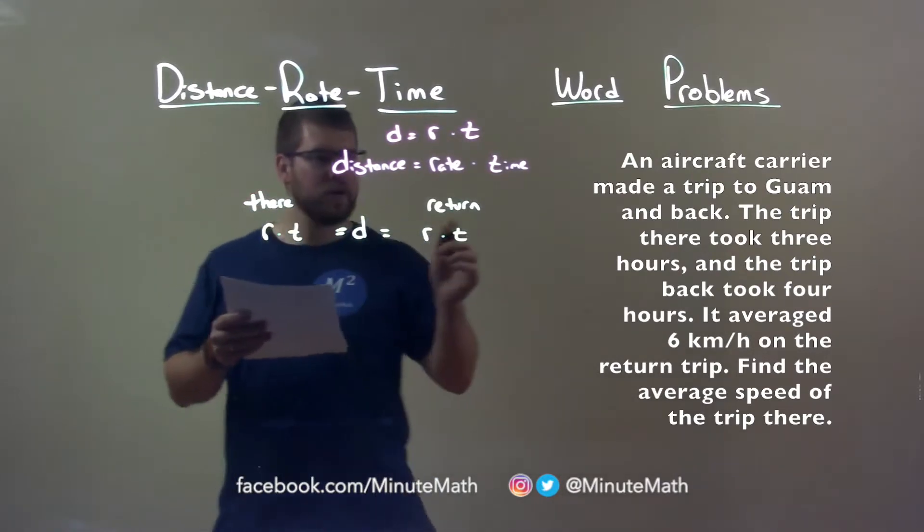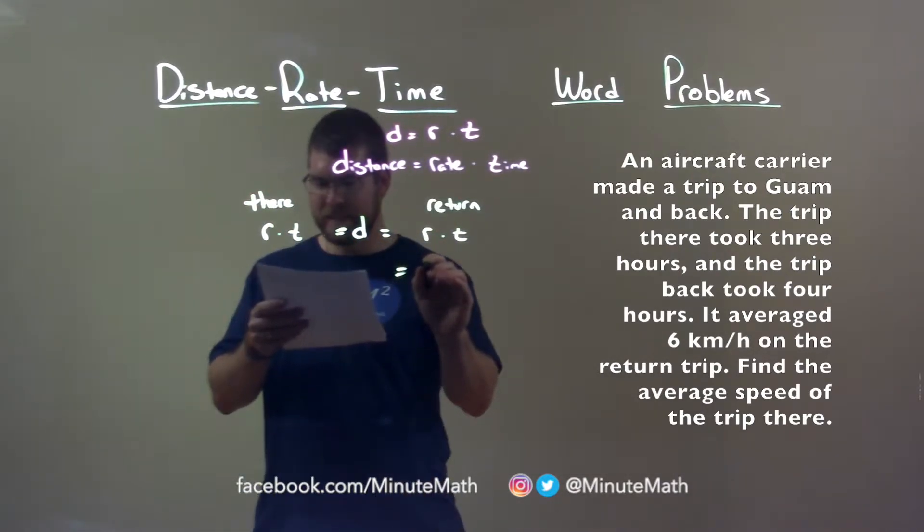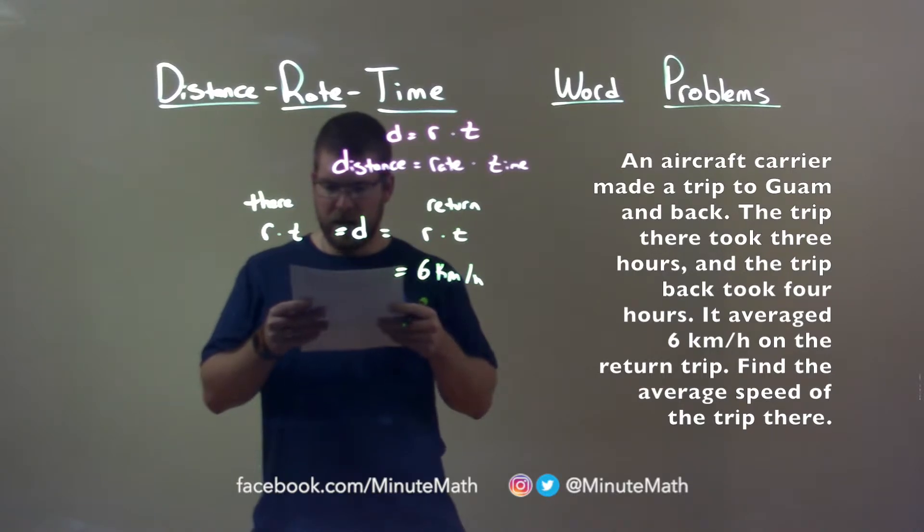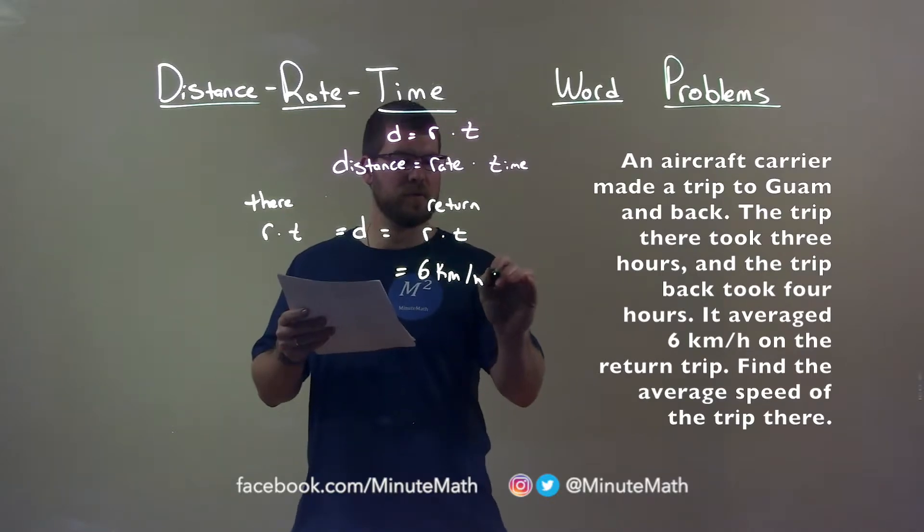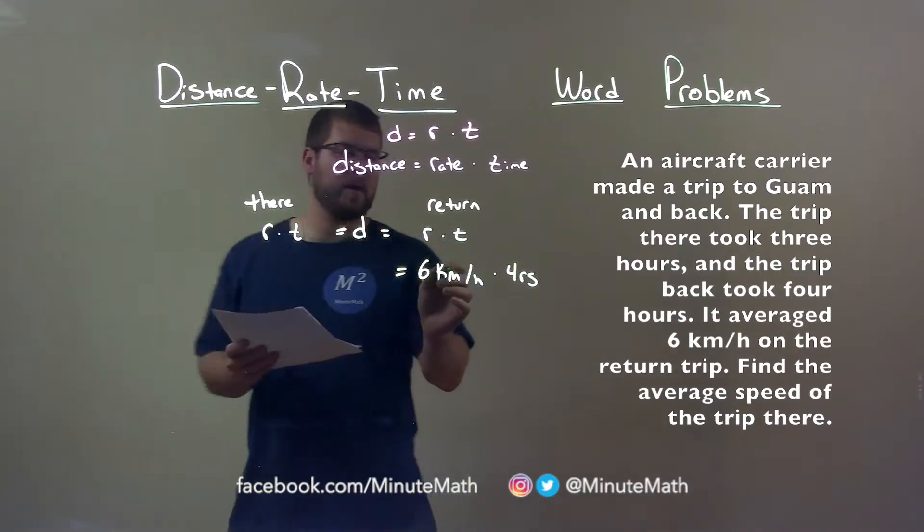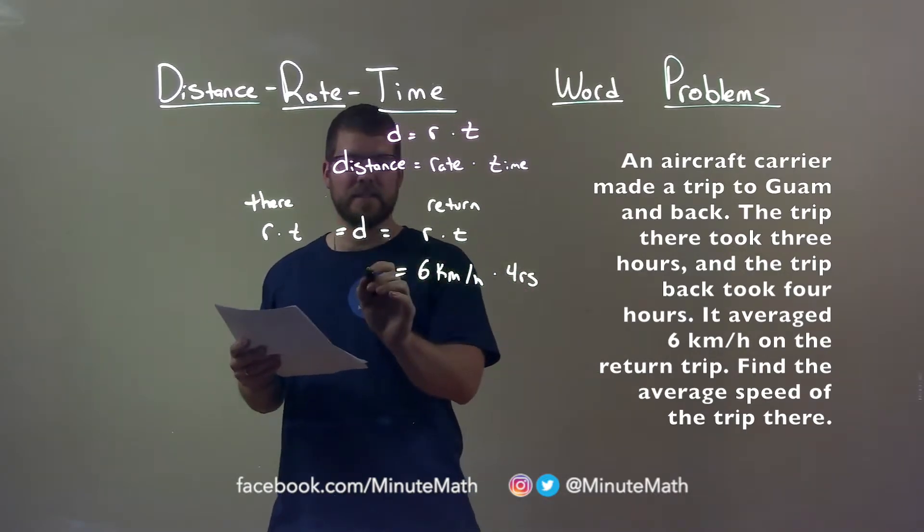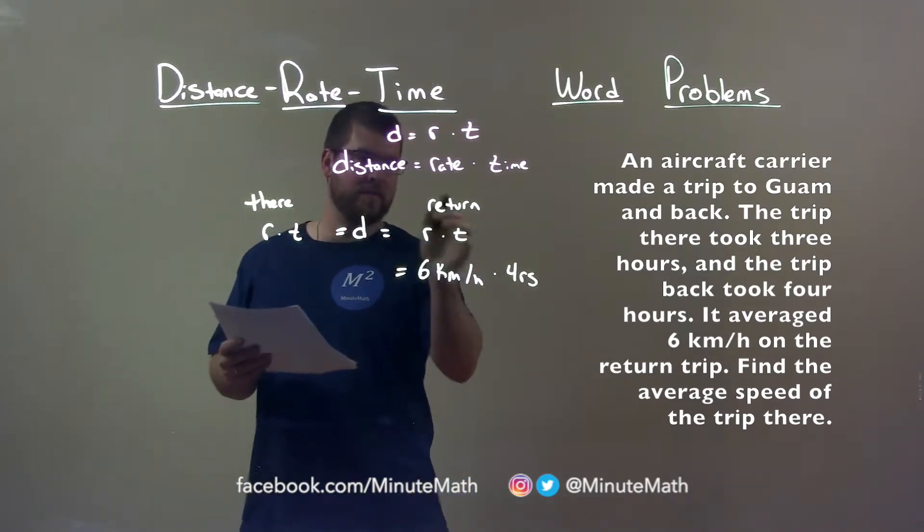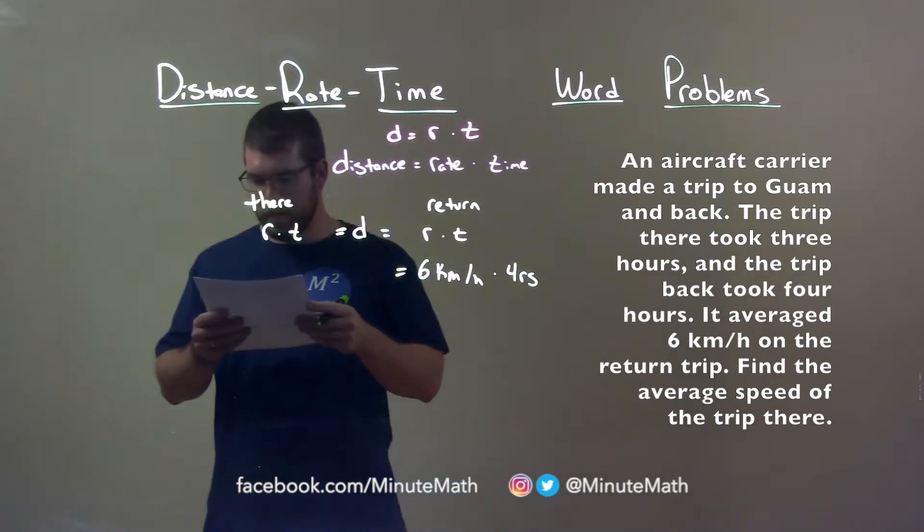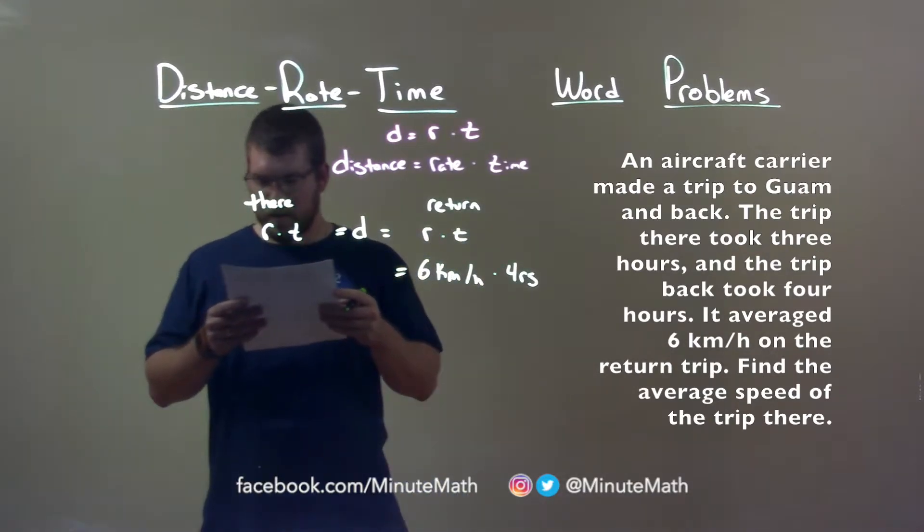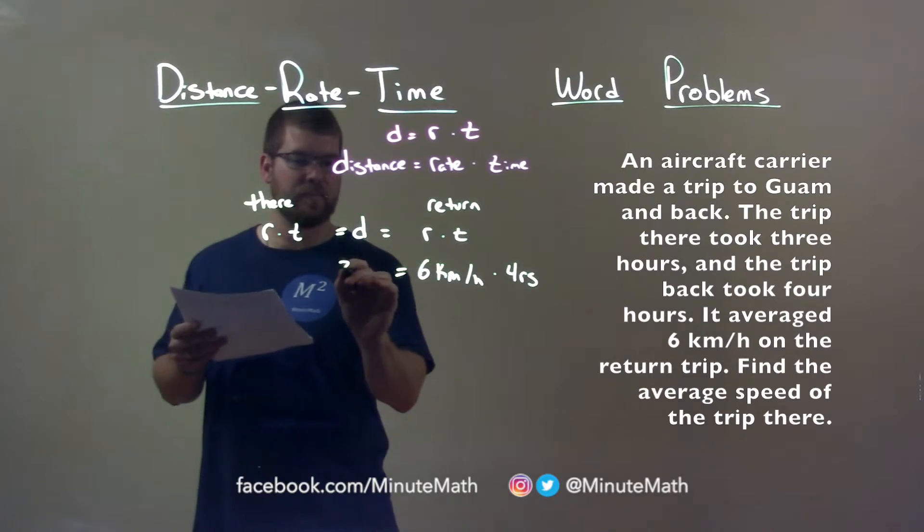On the return trip, they said it averaged six kilometers per hour and the trip back took four hours. So the return trip took four hours, and we have six kilometers an hour times four hours. That gives us the total distance. The trip there took three hours.